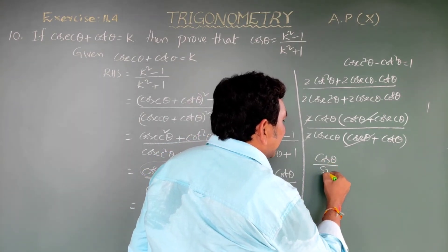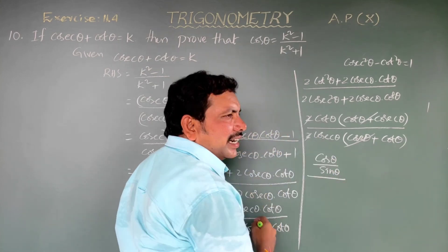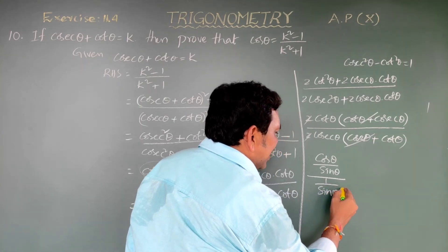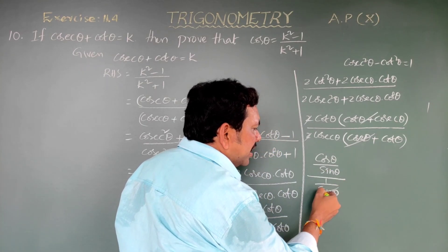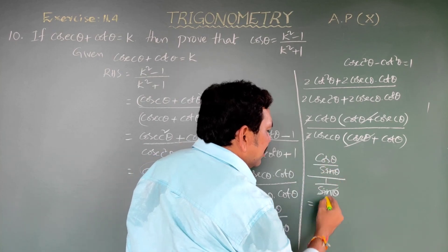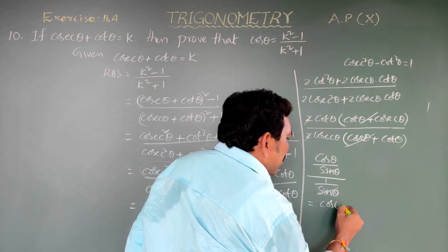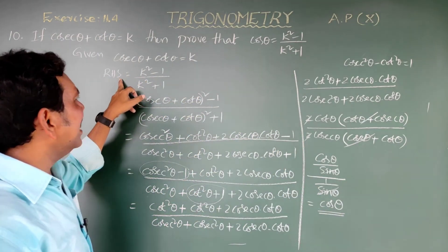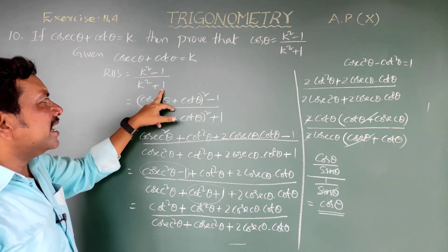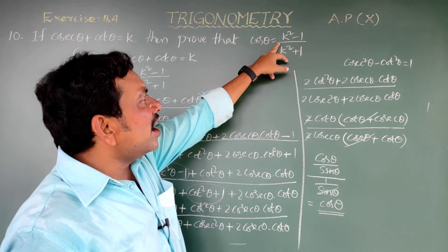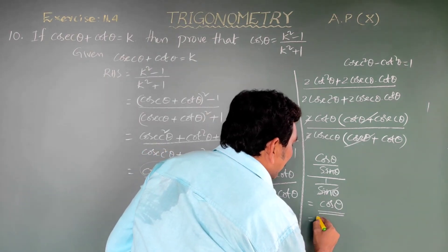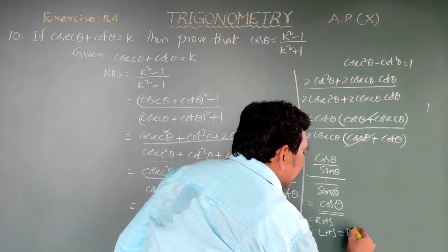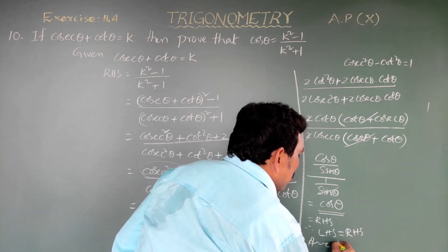cot theta in terms of sine and cos is (cos theta by sin theta), and cosecant theta is 1 by sin theta. So (cos theta / sin theta) divided by (1 / sin theta) — the sin theta terms cancel, leaving cos theta. This equals the LHS. Therefore LHS equals RHS, hence proved.